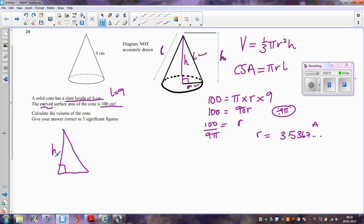Okay, so don't know the height. L is 9, and the radius is my saved 3.536 and so on. Using Pythagoras then, h squared plus the radius squared, so the 3.536 and so on squared, will equal 9 squared.